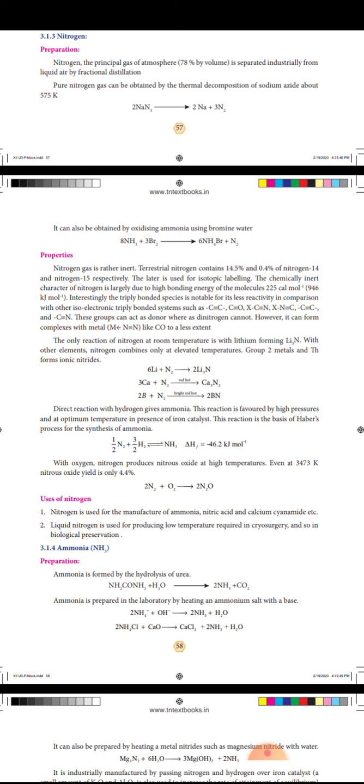Second, liquid nitrogen is used for producing low temperatures required in cryosurgery and in biological preservation.